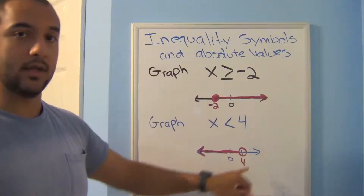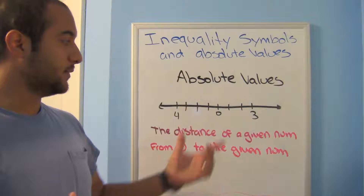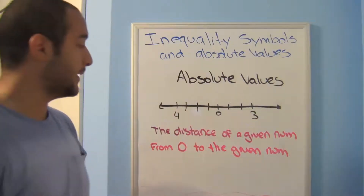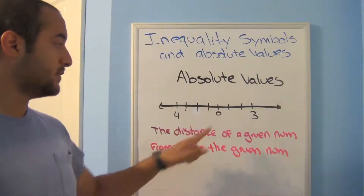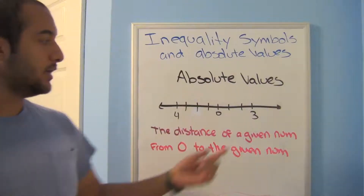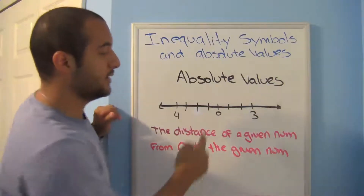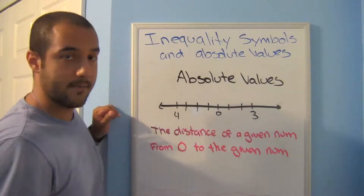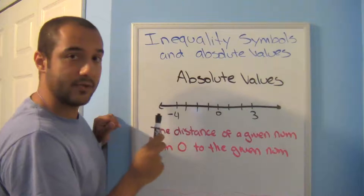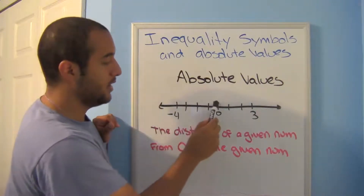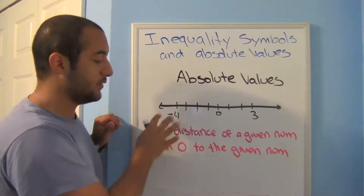Absolute values — once you get used to them you don't always need a number line, but they do deal with the number line. The definition is: it is the distance of a given number from zero. So the absolute value of three — count how many units away from zero: one, two, three. For negative four, even though it's negative, we count units from zero to negative four: one, two, three, four — four units.